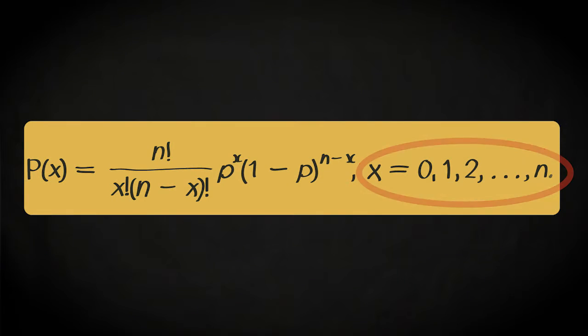As indicated on the second line below the formula, the binomial distribution is a discrete distribution where the random variable x can only take the values ranging from 0 up to n. Which makes sense, as you can only have a finite number of successes, 0, 1, 2, up to the number of n trials.